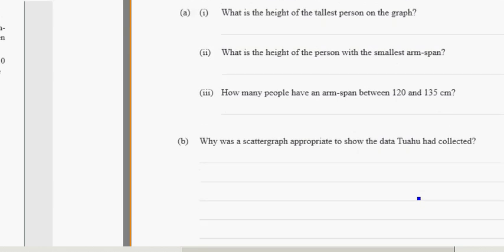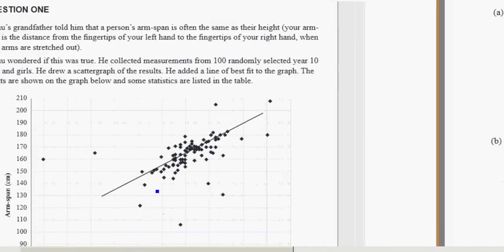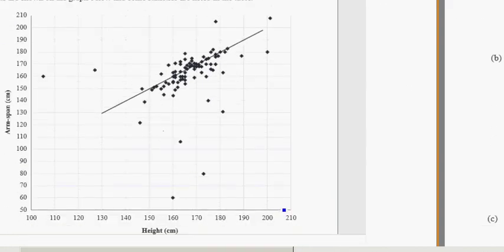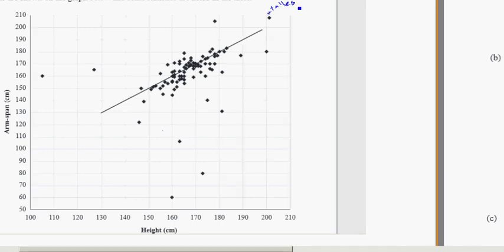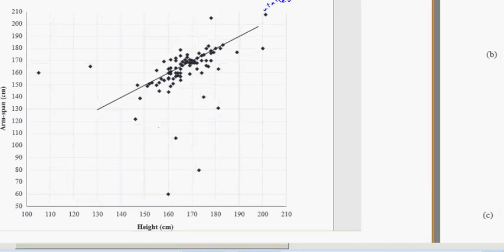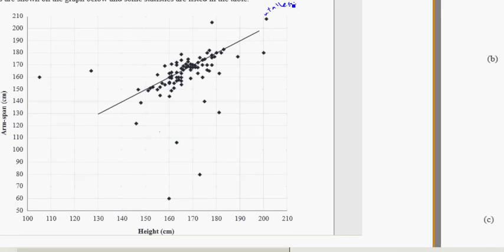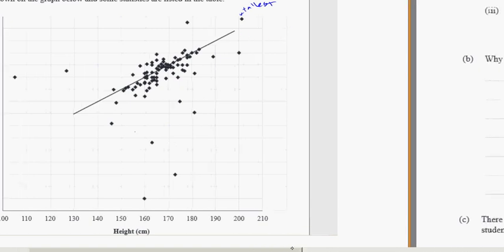First question: what is the height of the tallest person on the graph? We're just going to look at height. Who is the tallest person? Height is going this way across the graph, and it looks like they're going to be the tallest with a height of roughly 202 centimeters or something like that. The answer schemes might be slightly different than your approximation, but I can't read that any closer. It's a little bit bigger than 200. 201, 202, 203, something like that you put down would probably be fine and accepted.